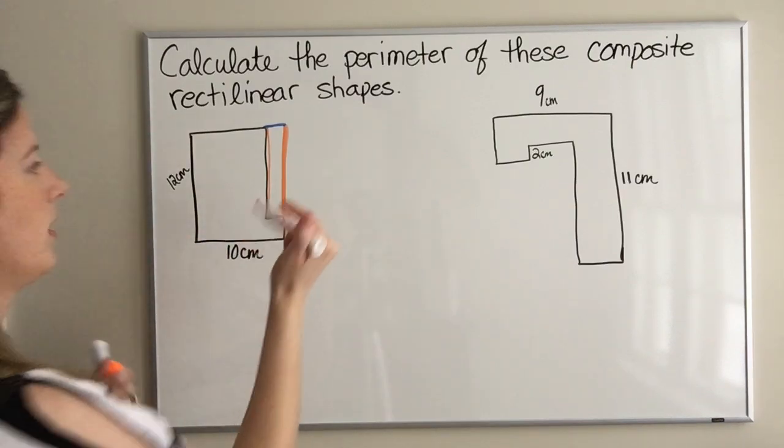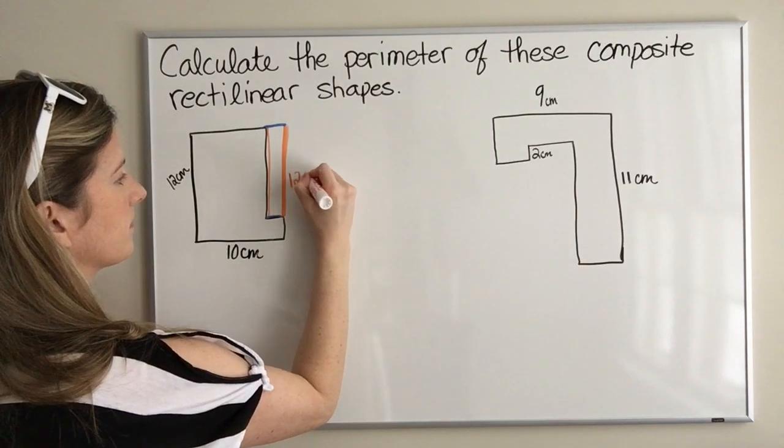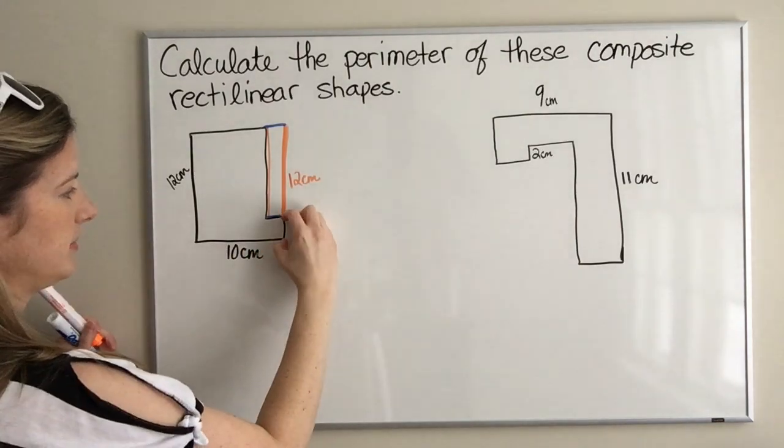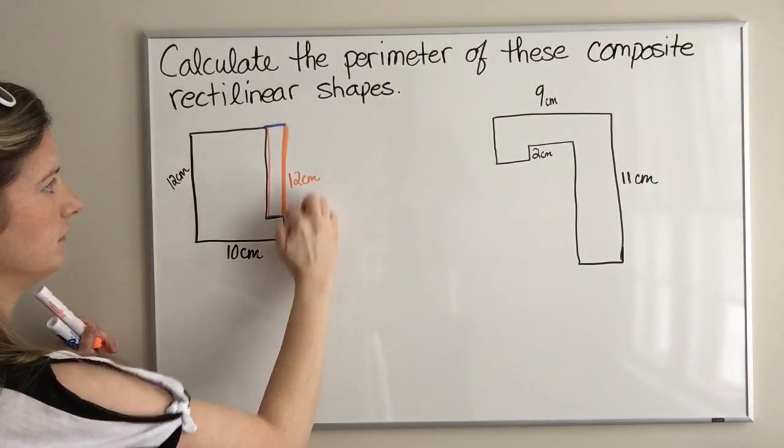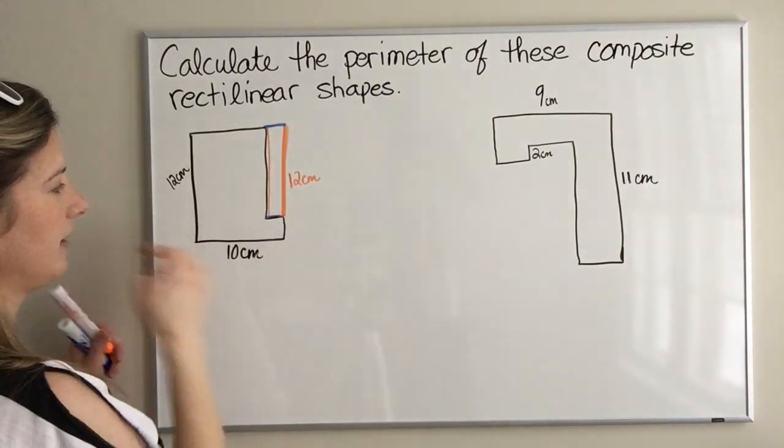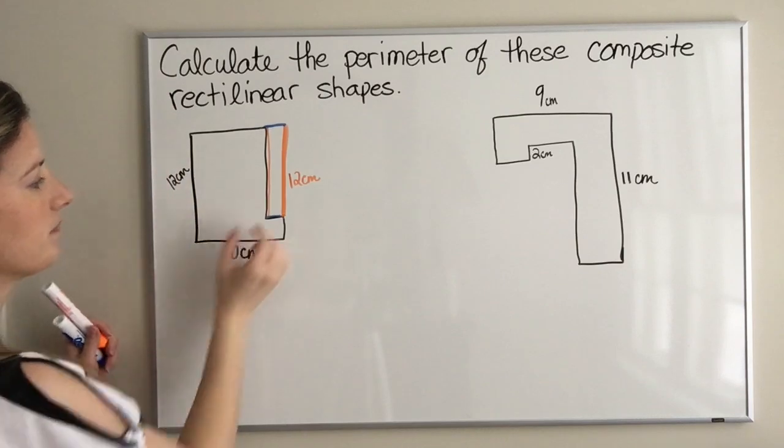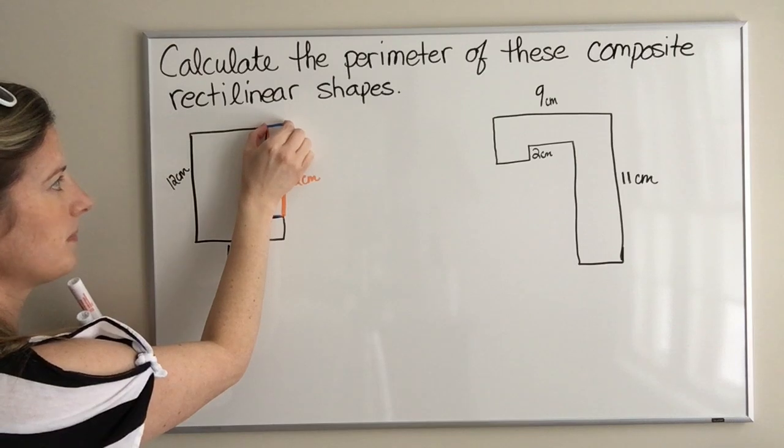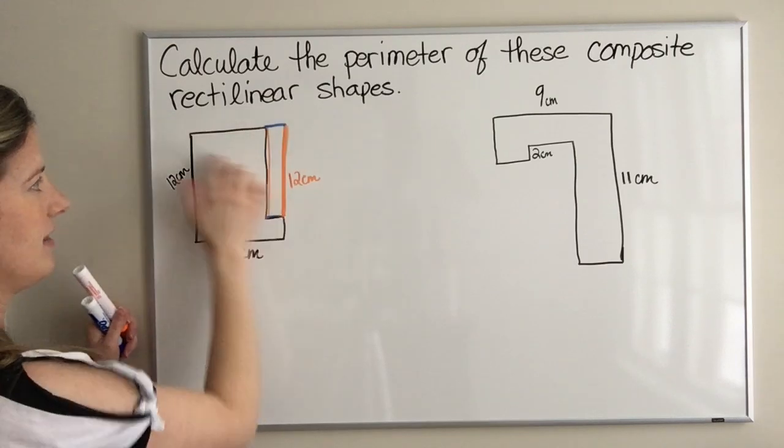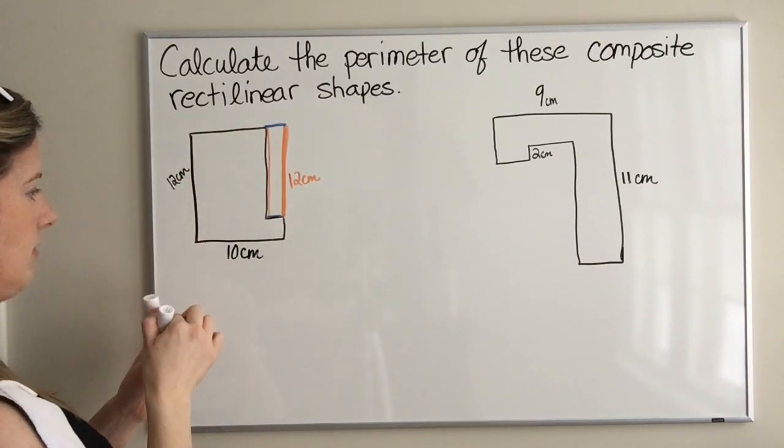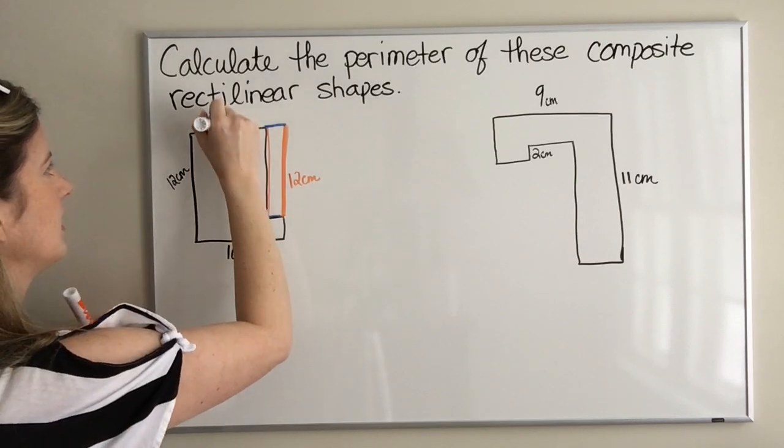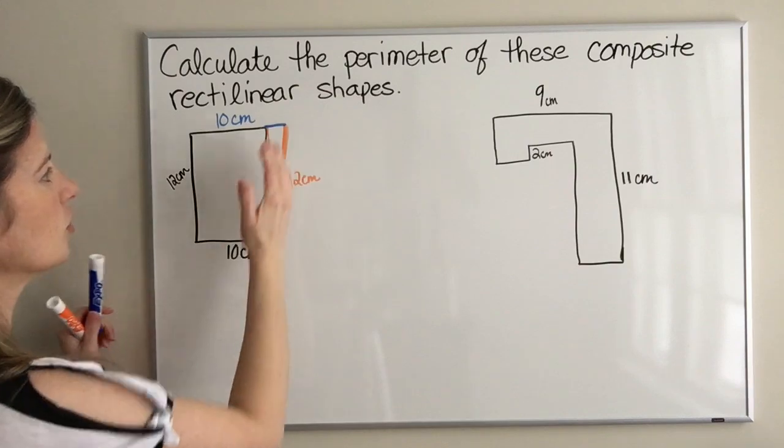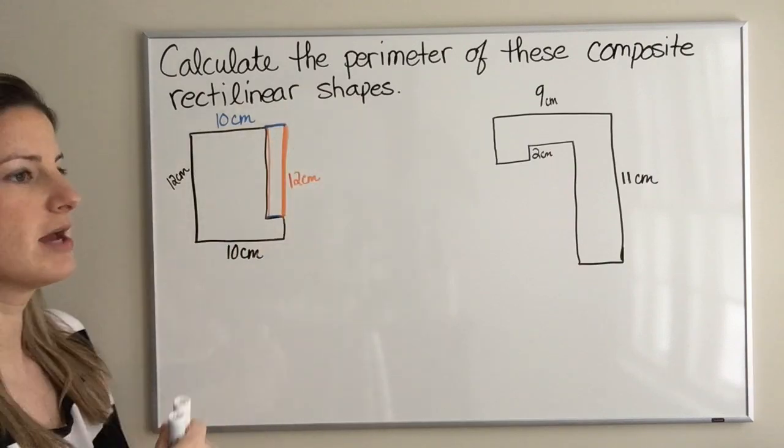The reason for that is this piece down here plus this piece that we moved together is the same length as this side over here. Same thing happened down here, we took this piece and we just moved it up here. Therefore this top piece right here is also going to be 10 centimeters, because it's the same length.